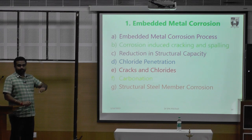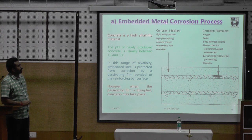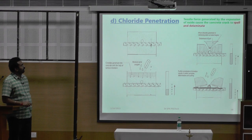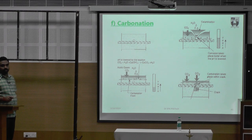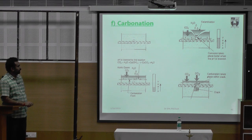I will correlate this with experiments conducted, as shown in previous slides. When you have embedded metal corrosion, there is a possibility of corrosion at the surface level. The pH should be between 12 and 13 in the range of alkalinity. When acidic gases such as carbon dioxide penetrate, the equation is: CO₂ + H₂O reacts with calcium hydroxide in concrete to form calcium carbonate. When calcium carbonate forms, the pH value gets reduced.